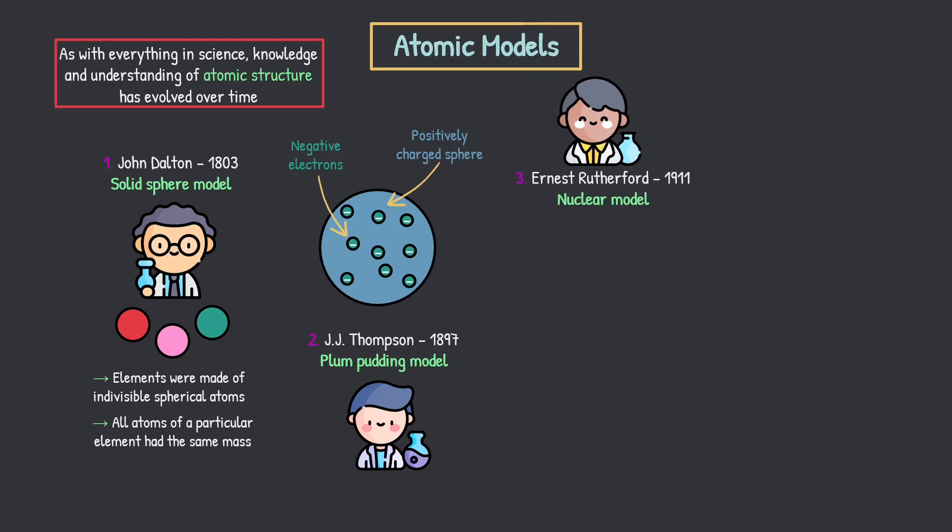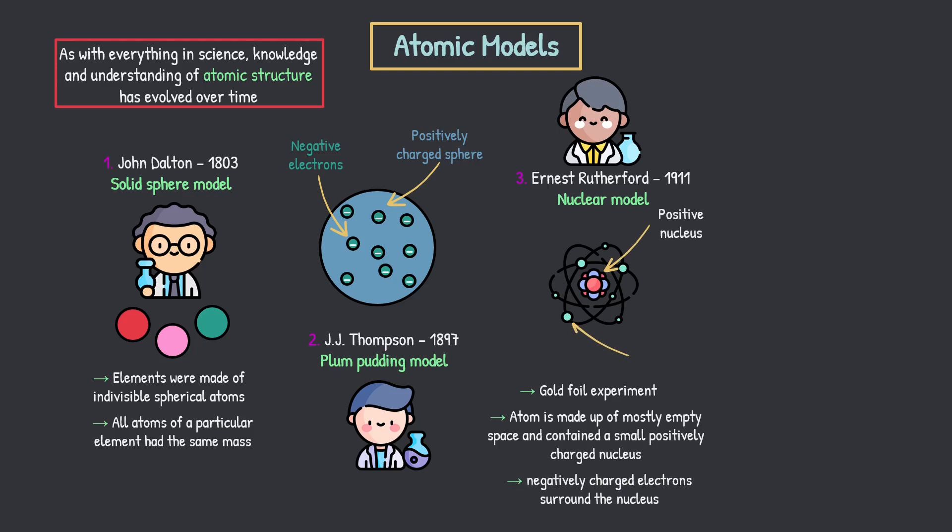Next up, another dude comes along, Ernest Rutherford in 1911. And he makes a huge progression. This is where we have the nuclear model. And he reached this conclusion for a variety of experiments, but the most famous one is the gold foil experiment. You should have covered this at GCSE guys. I'm not going to go into detail here. So this is where an atom is made up of mostly empty space. And it contains a teeny tiny positively charged nucleus at the center. And the negatively charged electrons surround this nucleus. So he had a bit of an idea of what was going on, but this wasn't it guys. The story doesn't end here. We had some progressions still to be made.